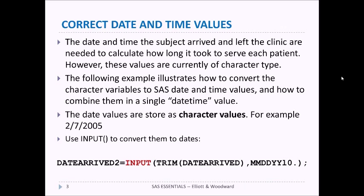The following example illustrates how to convert the character values to SAS date and time values, and how to combine them into a single datetime value. The date values are stored as character values — for example, 2/7/2005 is in a character variable. We use the INPUT function to convert them to dates, using the TRIM function to remove any blanks around date_arrived, and converting it using the MMDDYY10. format. The result is a new variable called date_arrived2.